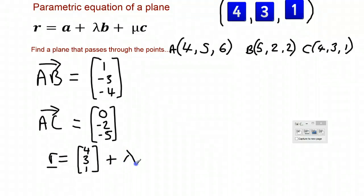Plus lambda times by one of my direction vectors, and it doesn't matter which one. So plus mu times by my other direction vector.